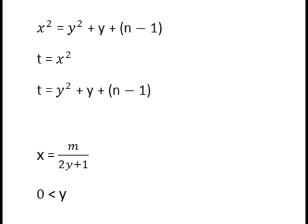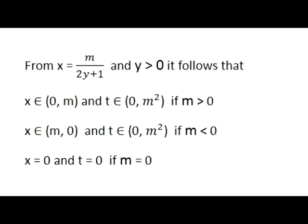We'll make one substitution, using a new variable t instead of x squared. The formula in the diagram shows the dependency of x and y, the coordinates of z, from the imaginary part of the target number, m.